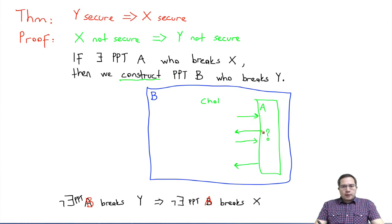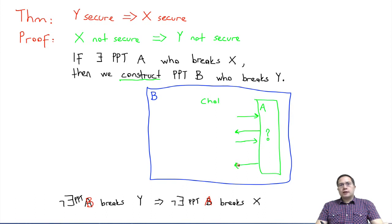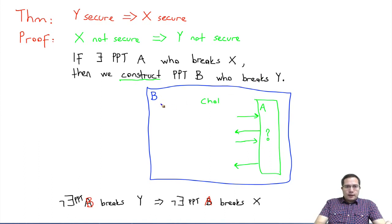Remember, we have no idea how A works. The only thing B knows is that A is going to behave according to this game — A will send some message as defined in this game, and A's output will ensure that A wins this game with some good probability. Those are the only things B can assume.